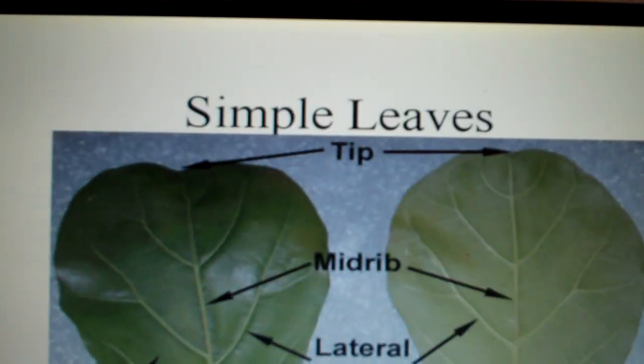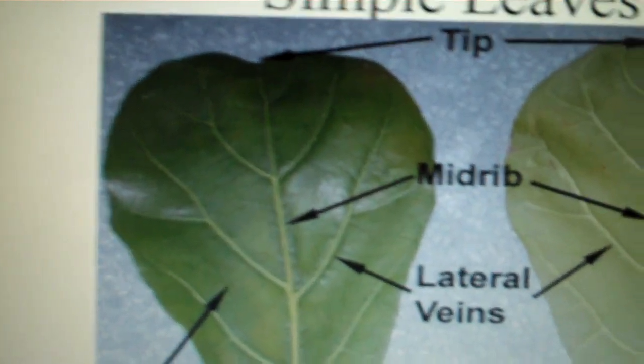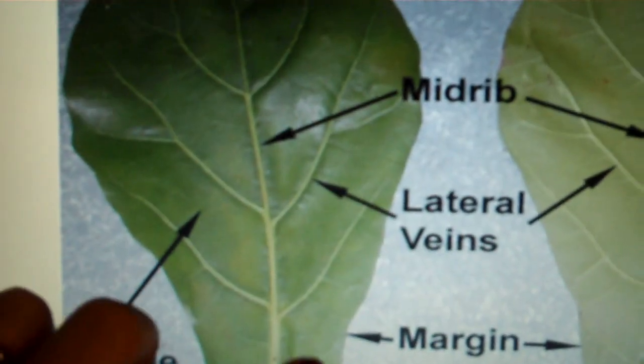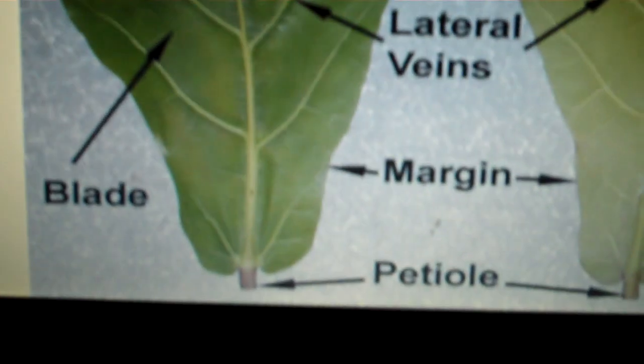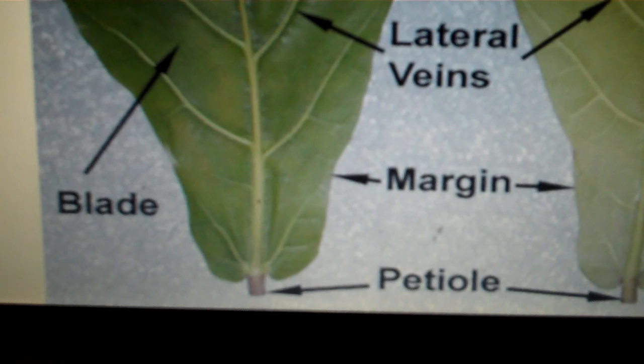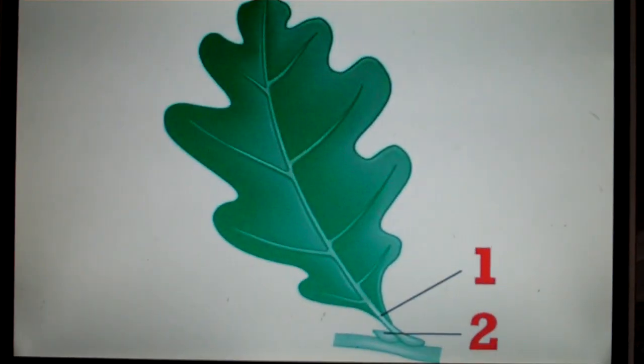Now types of leaves. We have simple leaves, which is just one leaf with veins running through it. The veins are the vascular tissue. The leaf is called a blade, and then we have the petiole where it would be attached to the stem.